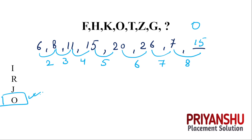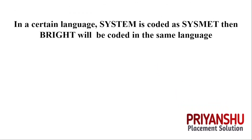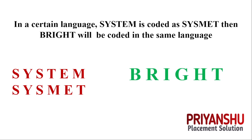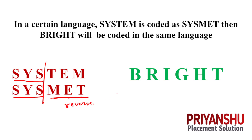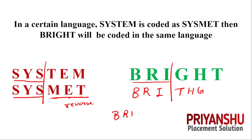If you have any doubt in any question, let me know in the comment box. Now: in a certain language, 'system' is coded as something and 'bright' is coded as something. Looking at 'system': S-Y-S — the first 3 alphabets are unchanged; T-E-M — the remaining 3 are reversed. So for 'bright': B-R-I remain unchanged, and G-H-T reversed gives T-H-G. The final answer is B-R-I-T-H-G.